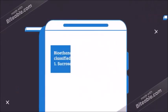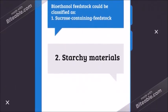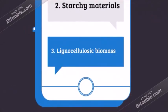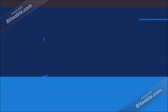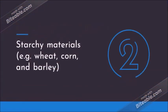We can classify bioethanol feedstock into three types. The first one is sucrose-containing feedstock such as sugar beets and sugar canes. The second one is starchy materials such as wheat, corn, and barley.